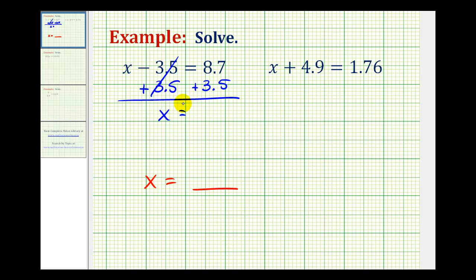And on the right side, we just need to find this sum. And because we're adding decimals, again we have the corresponding place values lined up vertically. We'll bring the decimal point down and then add normally. So we have 7 plus 5, that would be 12, so we put a 2 here and carry a 1. 1 plus 8 plus 3 would be 12.